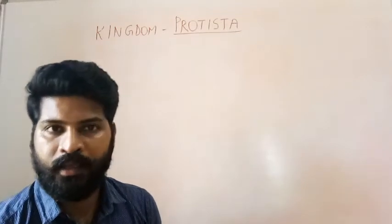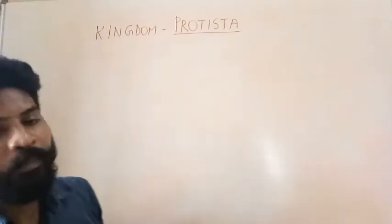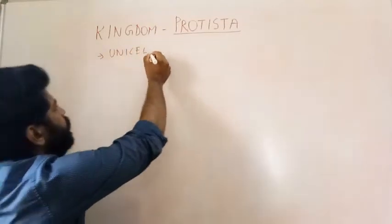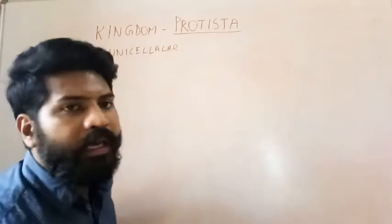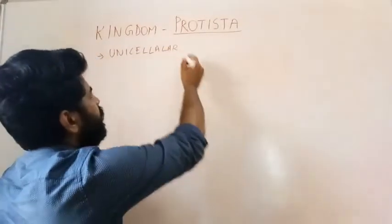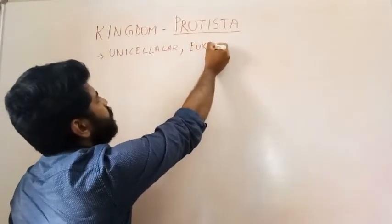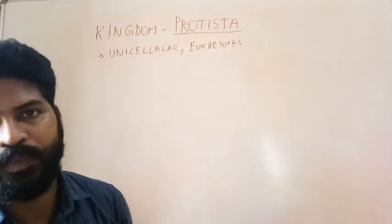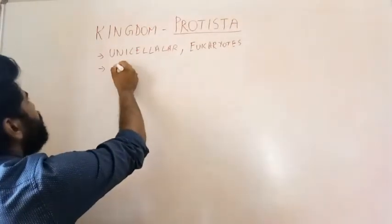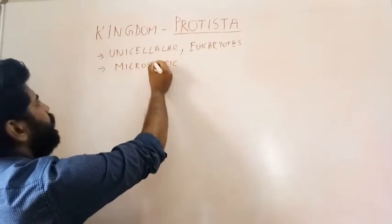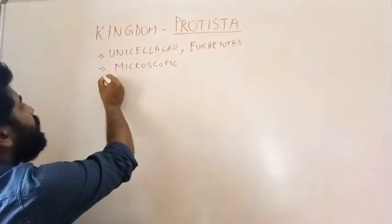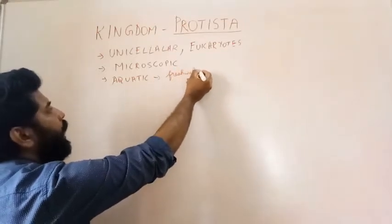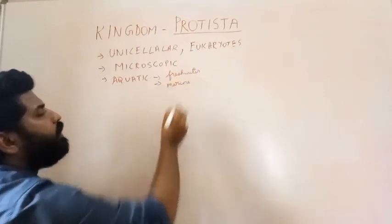Kingdom Protista also contains unicellular organisms, but they are different from bacteria in the sense that they are eukaryotes. Kingdom Protista consists of unicellular eukaryotic organisms. These are mostly microscopic in nature. They are mostly aquatic, present both in freshwater as well as in marine water.